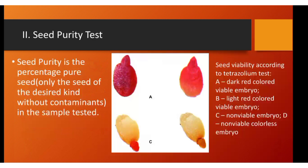Next is the seed purity test. In the tetrazolium test illustration, you can see four seeds tested. Seeds A and B are viable because they reacted to the chemical and turned pink to red, while seeds C and D are non-viable — they will not germinate due to their dead embryo.